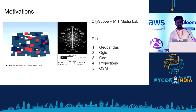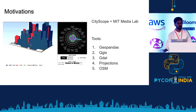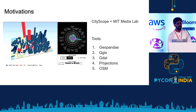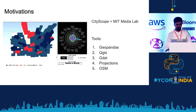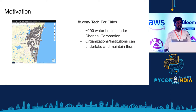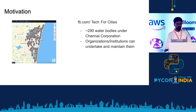The motivation of my work: I was working with MIT Media Lab on an urban planning tool called City Sciences. We've been using tools like GeoPandas, QGIS, projection, and OSM. Early September this year, I'm also part of a Facebook group called Tech for Cities. I found a web app where Chennai Corporation has listed 290 water bodies — major water bodies that can be undertaken and maintained by any organization or institution.